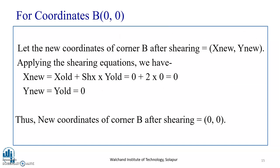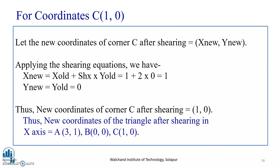For corner B(0,0), after applying the shearing equation, x-new = 0 and y-new = 0. Thus the new coordinates of corner B after shearing are (0, 0). For corner C(0,1), x-new = x-old + shx × y-old = 1 + 2×0 = 1, and y-new = y-old. Thus the new coordinates after applying shearing in the x direction for the given triangle are: A = (3,1), B = (0,0), C = (1,0). We are now done with the shearing using the x axis.